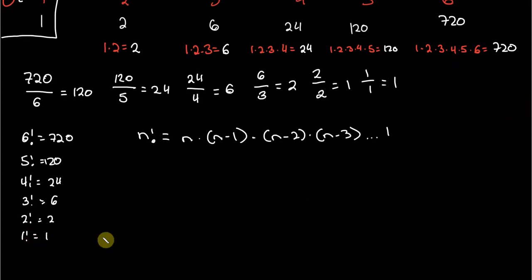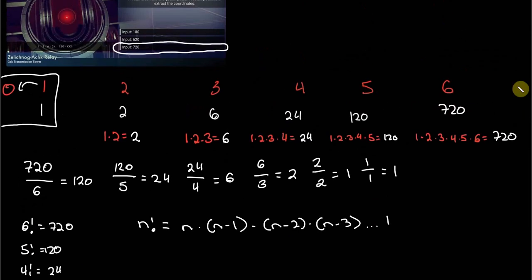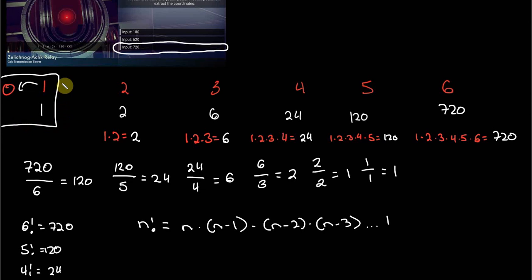What about 0 factorial? Well, one might think it equals 0 — but in fact, it turns out that 0 factorial equals 1. And so, approaching it this way, the breakdown in logic when you get to the first term — where you're multiplying by 0 and that equals 0 — makes sense now, because 0 factorial equals 1.